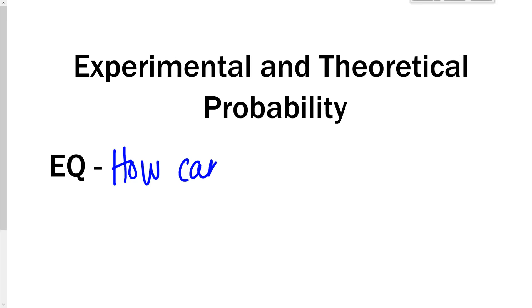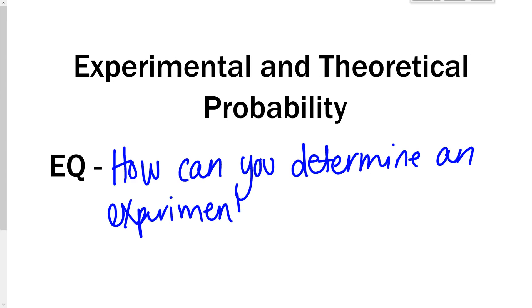Essential question: how can you determine an experiment from what should happen?